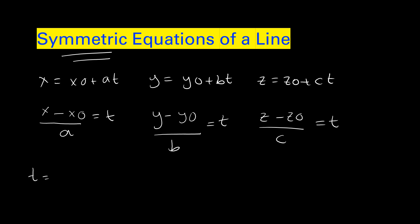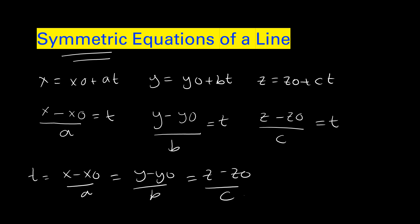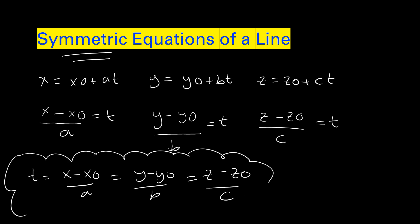We write: t = (x − x₀)/a = (y − y₀)/b = (z − z₀)/c. This is the symmetric equation of a line. You can memorize this formula, but what I usually do is just write the parametric equation and then solve for t — I find it simpler that way. But if you can remember the formula, just plug the numbers in directly.